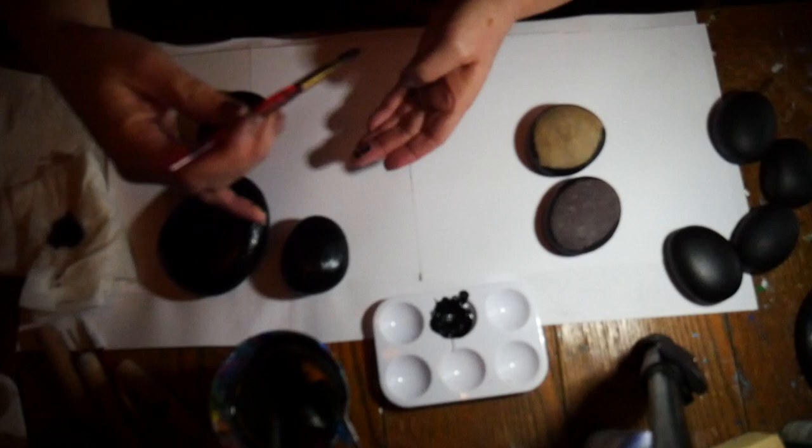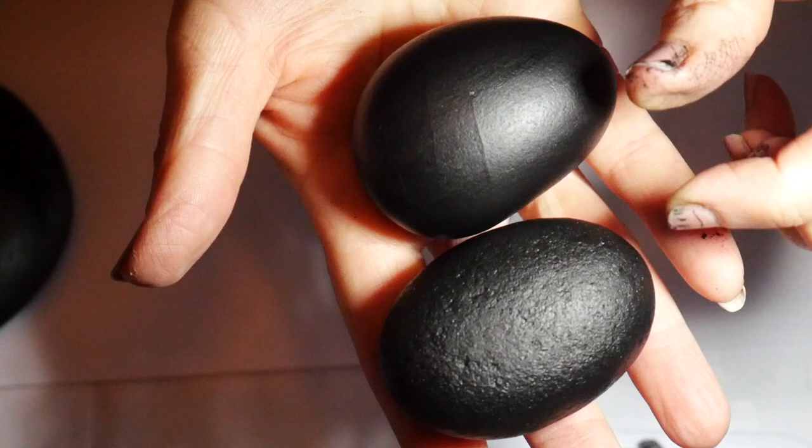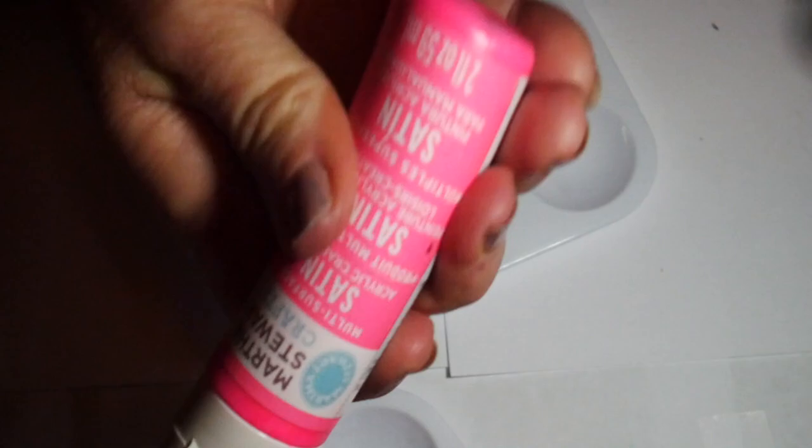That's my Martha Stewart black satin, and then I let these dry overnight before I started with the color. You can see I used a couple different types of rocks - some were smoother than others, but it really didn't matter on this project.